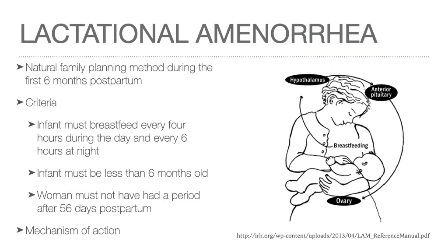The lactational amenorrhea method, or LAM, is a temporary family planning method to help support both breastfeeding and family planning use. It is effective for up to six months after childbirth. It requires three conditions: first, the baby is fully or nearly breastfed and is fed often day and night; second, the infant must be less than six months old; and lastly, the mother's monthly bleeding has not returned.